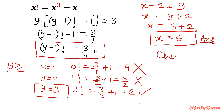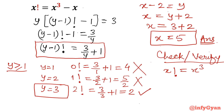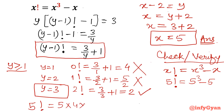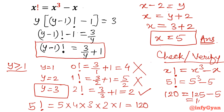Your answer is x equals 5. Now let's verify: x factorial equals x cube minus x. 5 factorial is 5 into 4 into 3 into 2 into 1, which equals 120. The right side is 5 cubed minus 5, which is 125 minus 5, that means 120. So left hand side equals right hand side — true! x equals 5 is the correct solution.